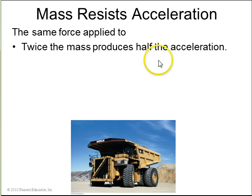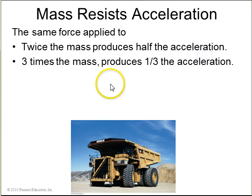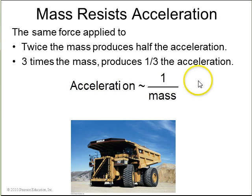The same force applied to twice the mass produces half the acceleration. If you apply the same force to three times the mass, it'll produce one-third of the acceleration. So, mass is resisting acceleration. The acceleration of an object in the squiggly line being proportional to 1 over the mass. And this has nothing to do with friction.